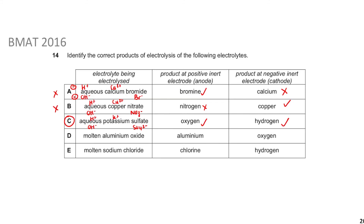For option D - molten aluminium oxide: when molten you don't need to worry about water. At the negative electrode you have Al3+ and at the positive electrode you have O2-. The positive electrode should form oxygen - but option D has this reversed, so D is incorrect. For option E - sodium chloride: sodium goes to the negative electrode and chloride to the positive, so chlorine should form at the anode - that's correct. But option E incorrectly shows hydrogen at the cathode when there's no hydrogen in the system, so E is also incorrect. The answer is C.